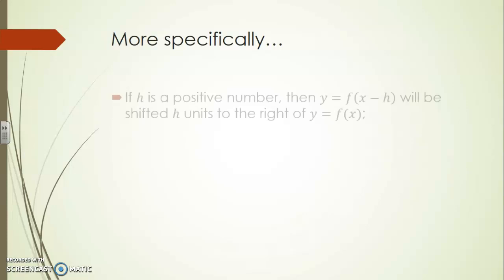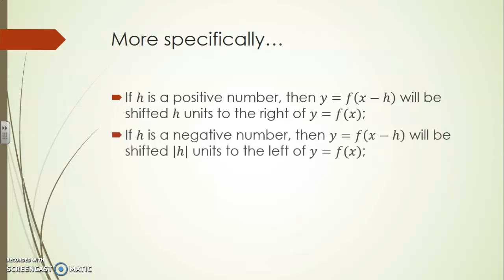More specifically if h is a positive number then y equals f of x minus h will be shifted h units to the right of y equals f of x. If h is a negative number then y equals f of x minus h will be shifted absolute value of h units to the left of y equals f of x.